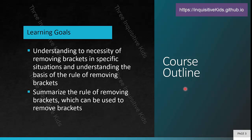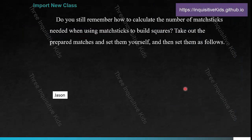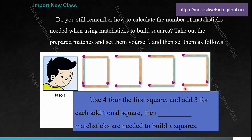Summarizing the rule of removing brackets, which can be used to remove brackets — you have to know that special rule we're going to learn. Do you still remember how to calculate the number of matchsticks needed when using matchsticks to build squares? Take out the prepared matchsticks and set them as follows: use 4 for the first square and add 3 for each additional square. Then 4 plus 3 times (x minus 1) matchsticks are needed to build x squares.